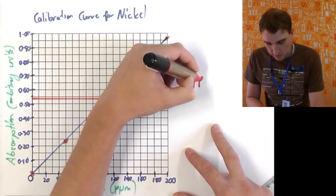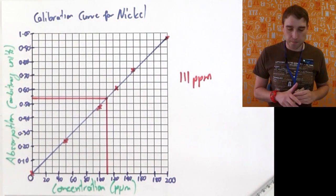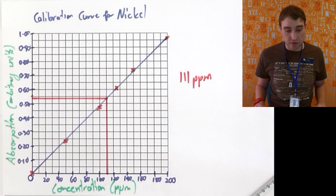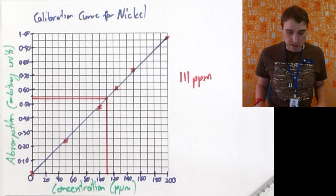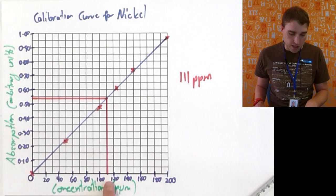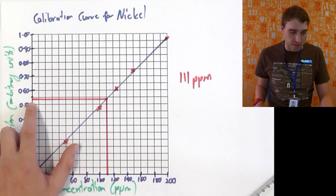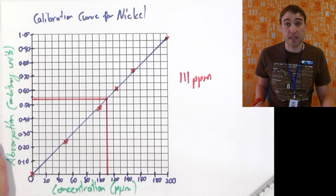So, 111 parts per million for the unknown. So, that's how you draw an AAS graph, a calibration curve once you're given the absorbance data, and that's how you find a concentration if you're given an absorbance from that. So, that's it for Flipping Science today. See you later.